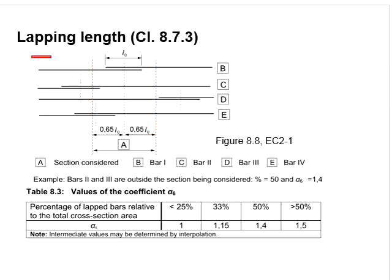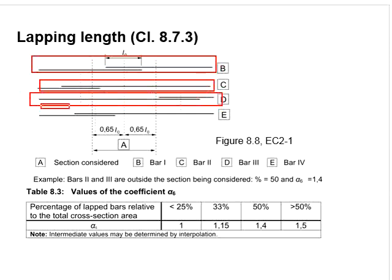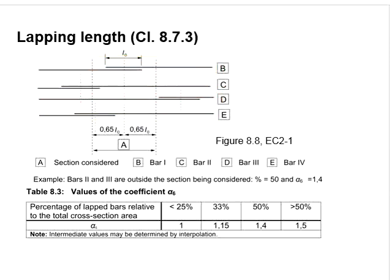Let's say there are other lapping lengths along the members here as represented by B, C, D, and E.